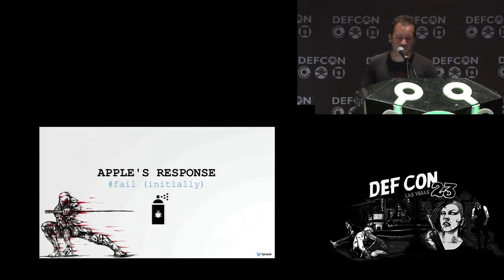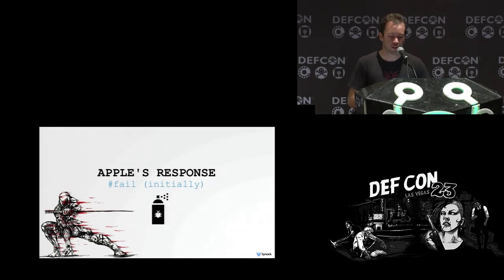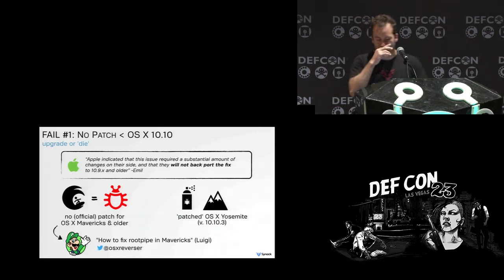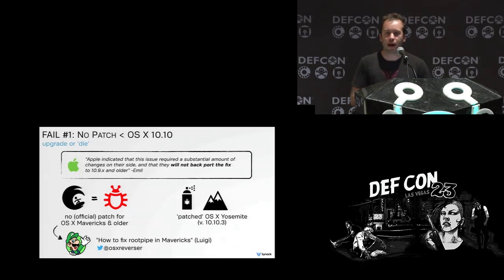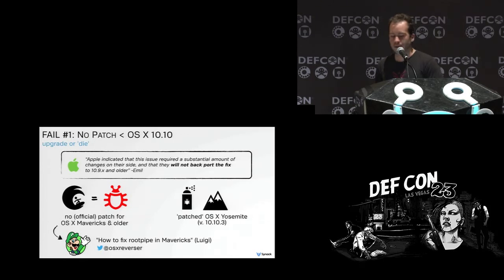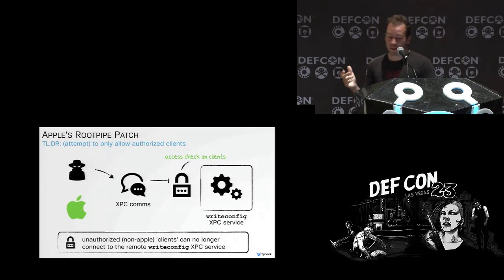Emil reported this bug to Apple in October. It took about six months to release the initial patch, which was insufficient. The first thing Apple did — which I think was somewhat of a fail — was decide not to backport their patch, basically saying it's too much work. However, Pedro OSX Reverser released a dylib for Mavericks that would monitor for connection attempts and ignore untrusted clients. I think it's funny or sad when independent researchers can help secure users more than the vendor. Apple did patch Yosemite, so let's look at what that patch did.